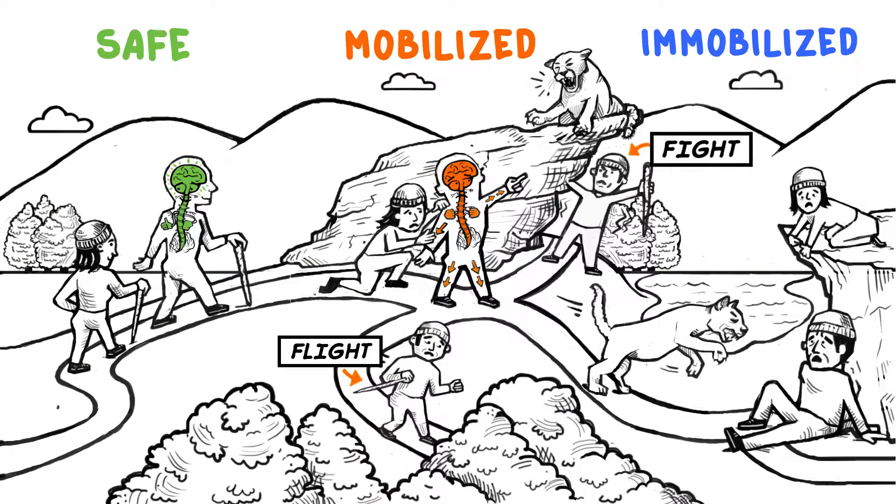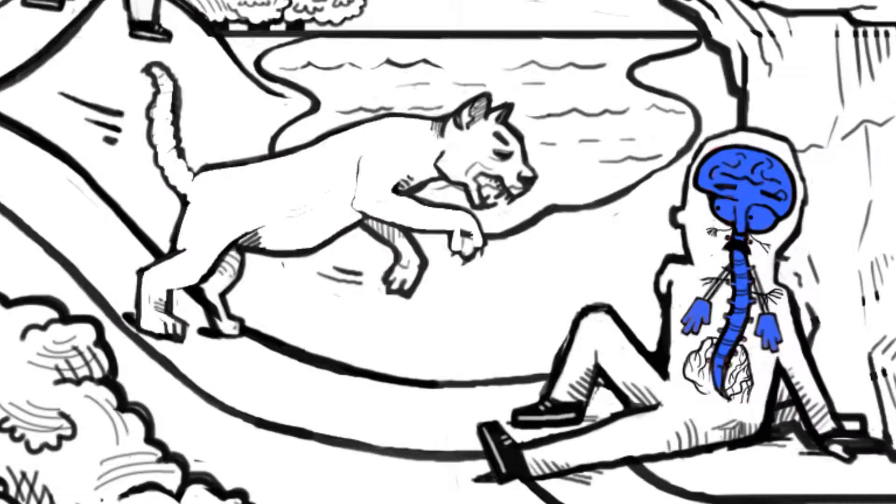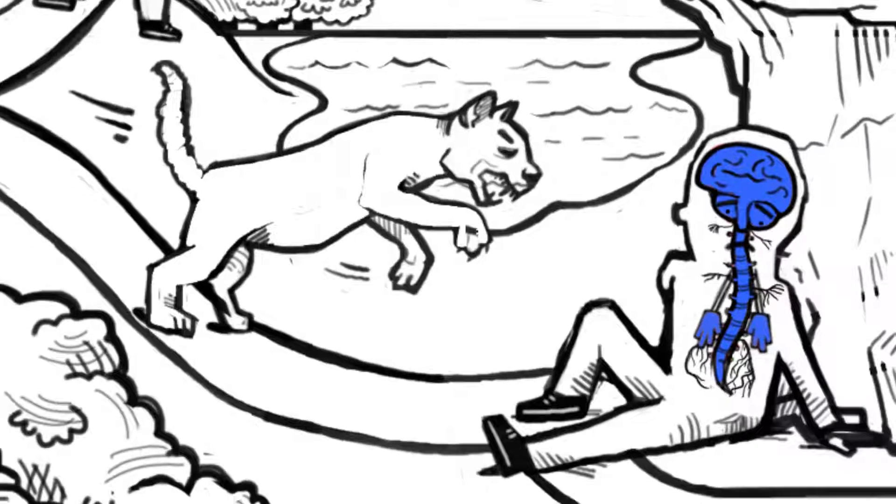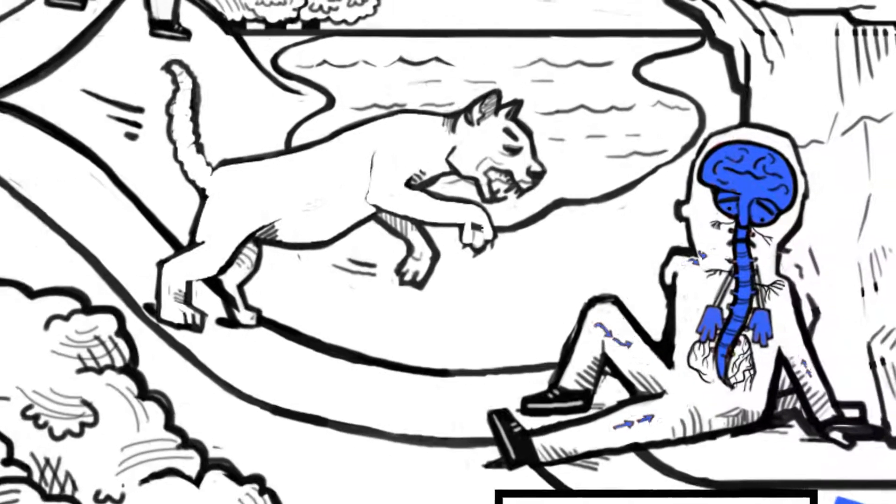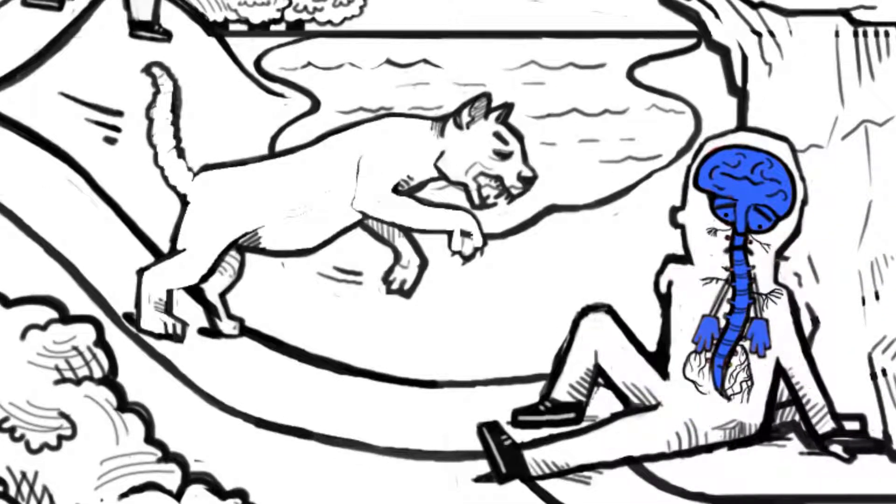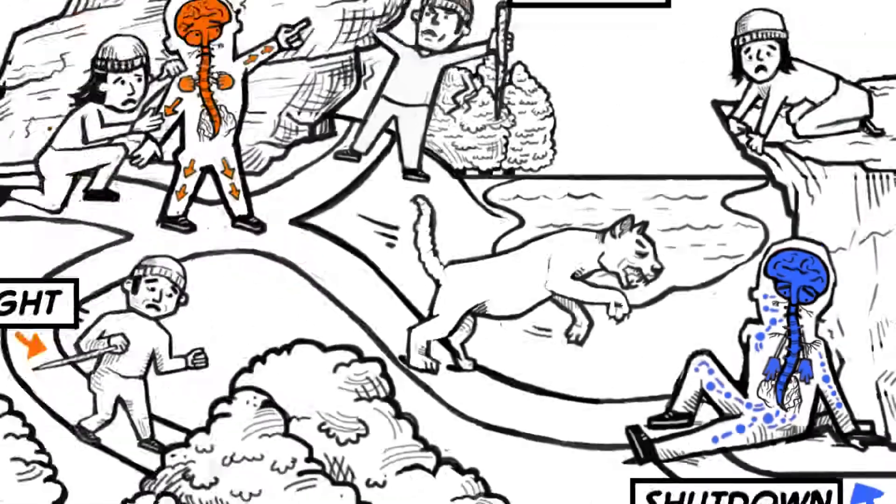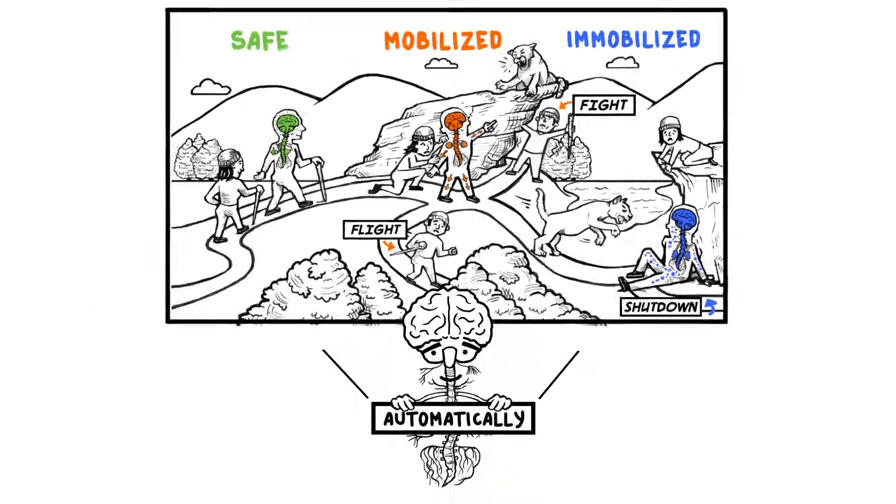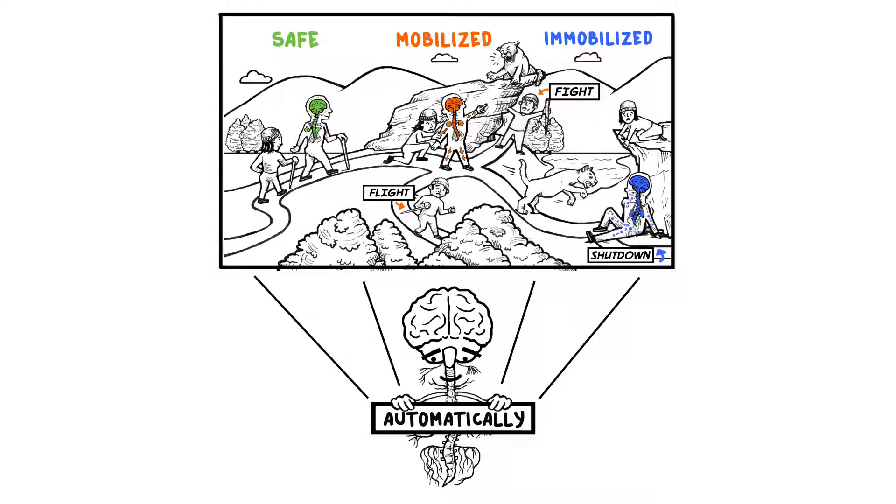Immobilized: When ANS detects that the danger is so great that you can't fight or run, it shuts you down. In this state, our heart rate, blood pressure, and body temperature decrease and pain-numbing endorphins are released. ANS does all of this automatically, without us thinking about it.